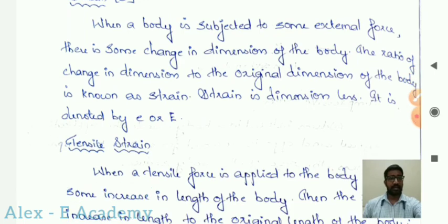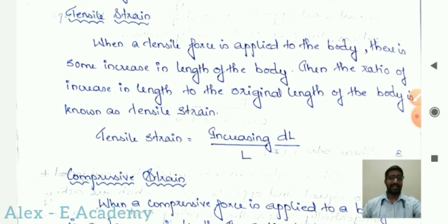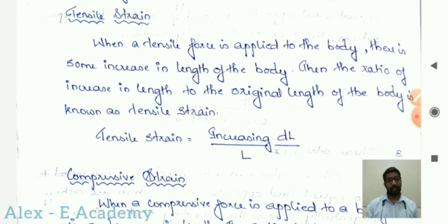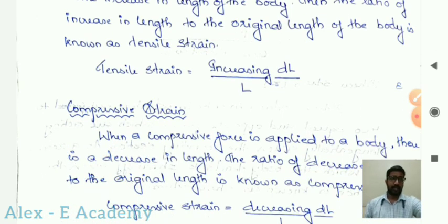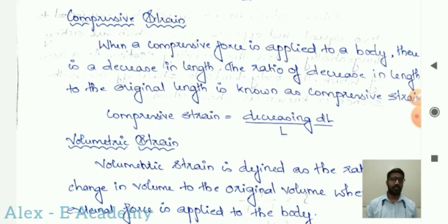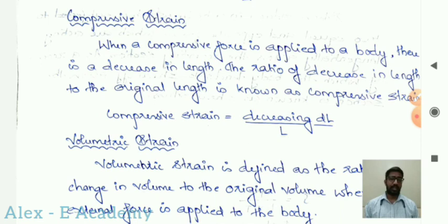Tensile strain: when a tensile force is applied to the body, there is some increase in length of the body. The ratio of increase in length to the original length of the body is known as tensile strain. Similarly, compressive strain: when a compressive force is applied to the body, there is a decrease in length. The ratio of decrease in length to the original length is known as compressive strain.